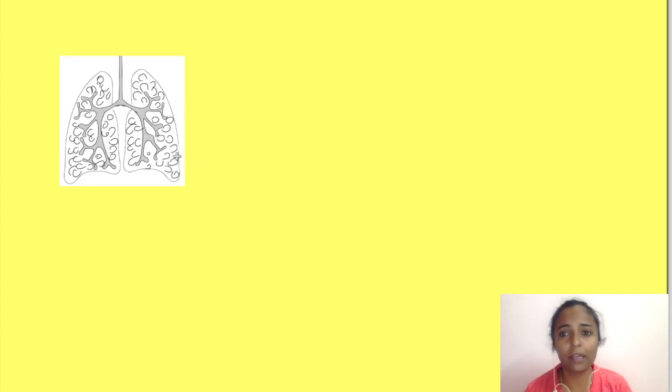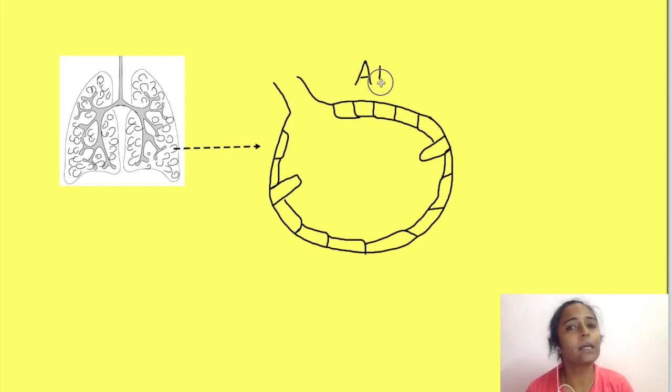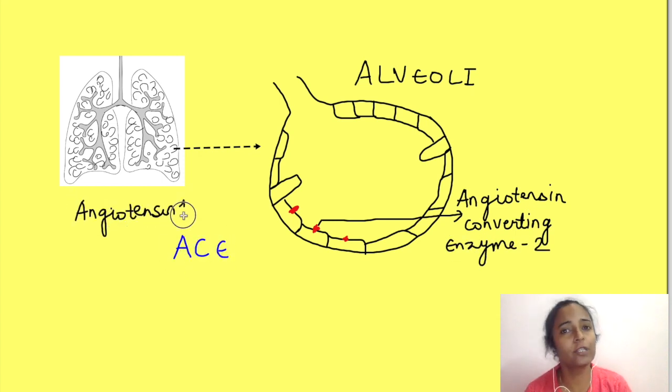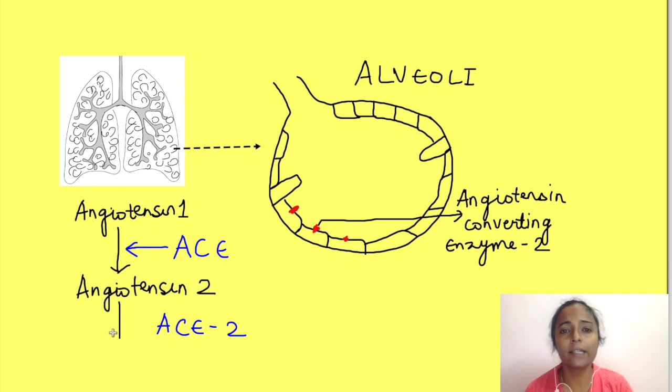So how does coronavirus gain entry into the human host cell? There is an enzyme present on the membrane of alveolar epithelial cells in lungs known as angiotensin converting enzyme 2 (ACE2). It is similar to ACE enzyme which converts angiotensin 1 to angiotensin 2. However, ACE2 further degrades angiotensin 2 and produces angiotensin 1 to 7.